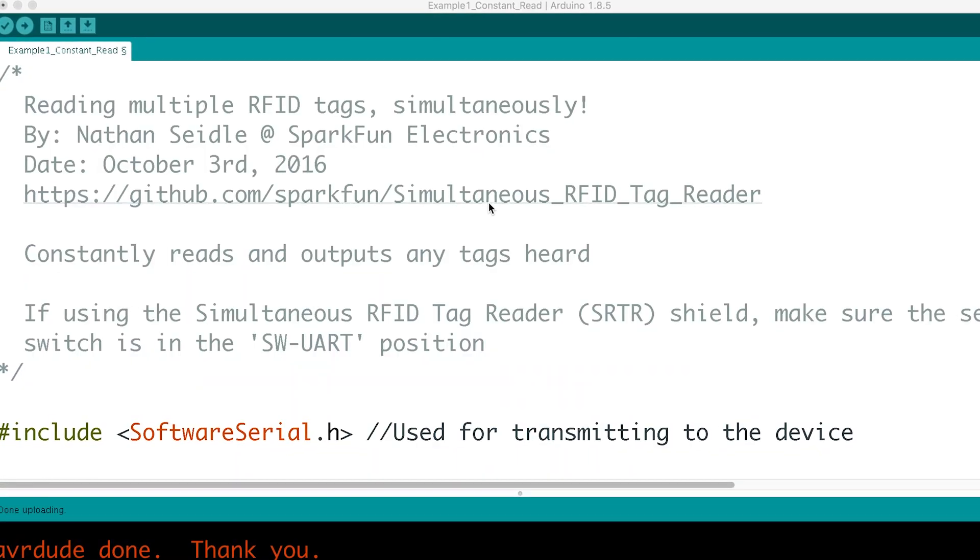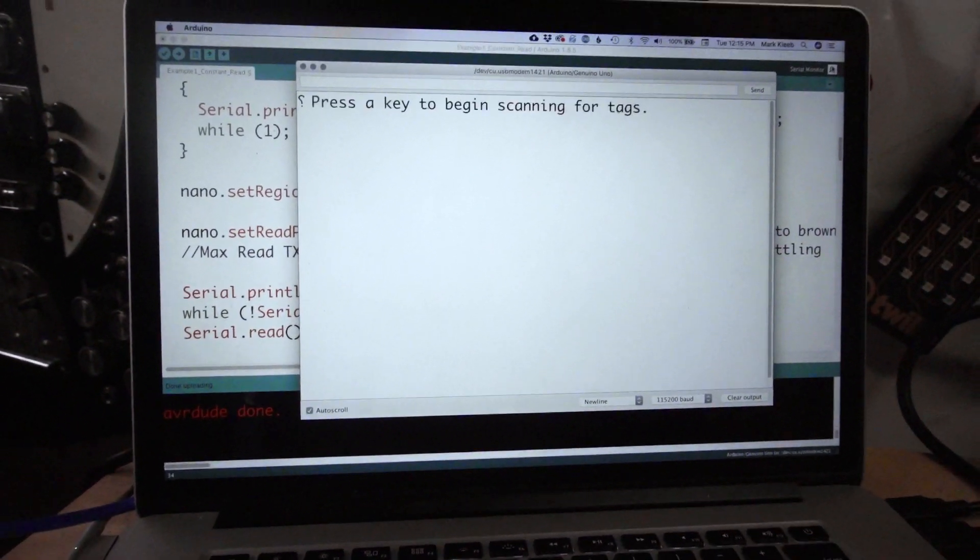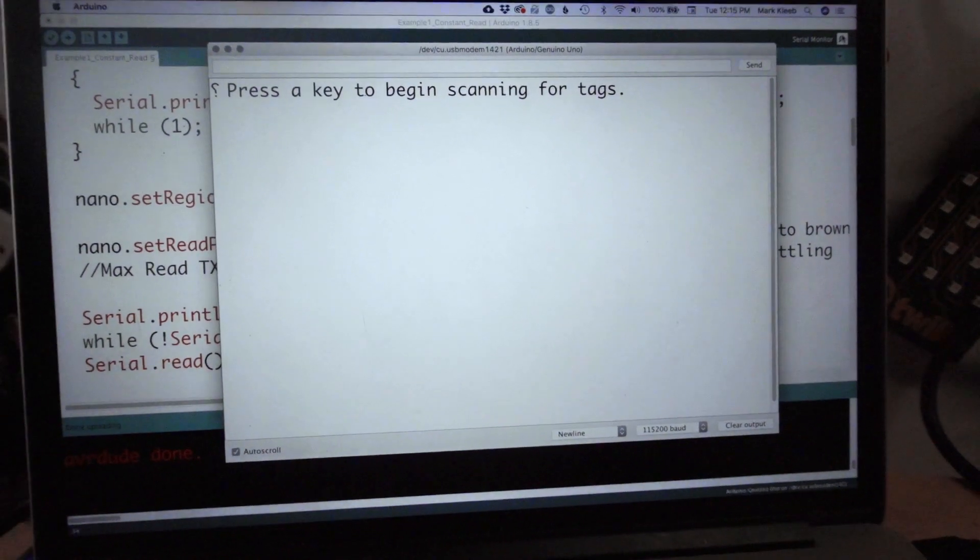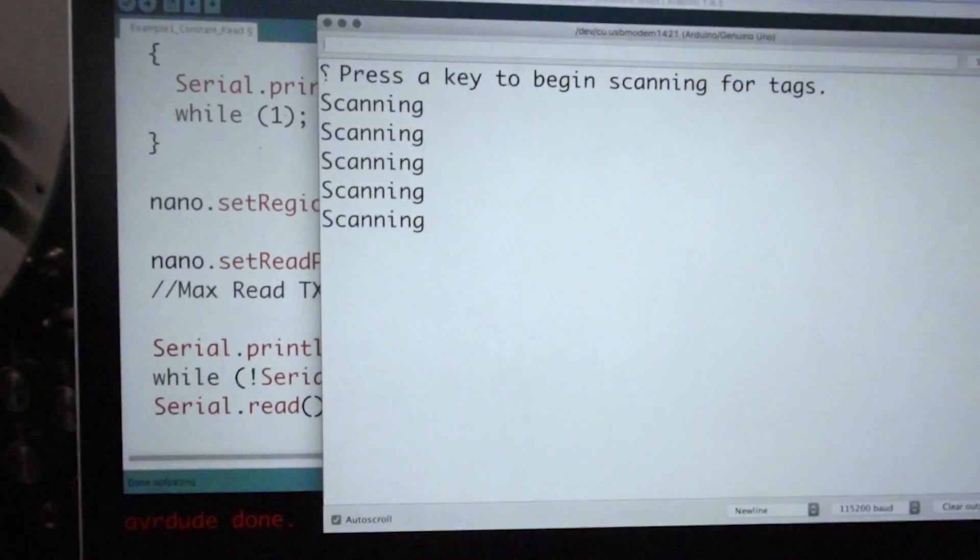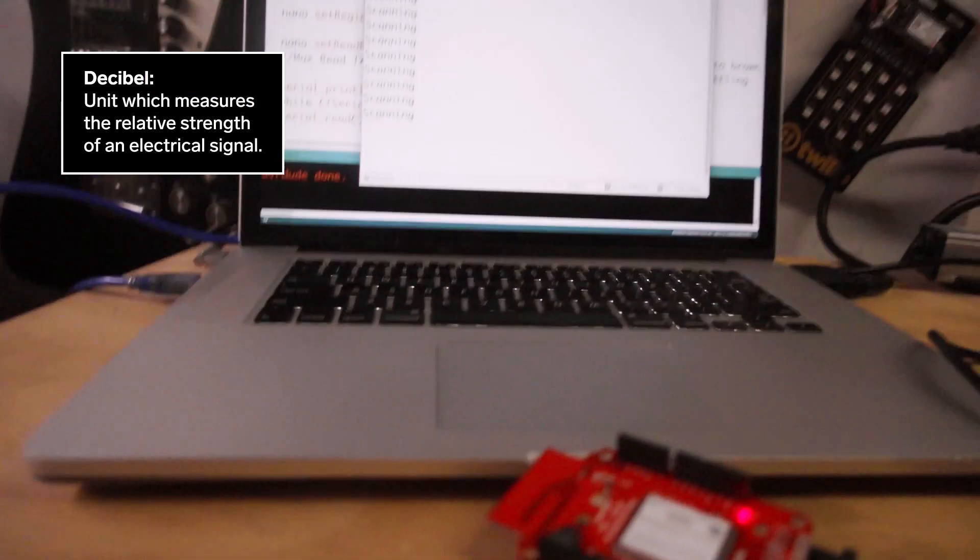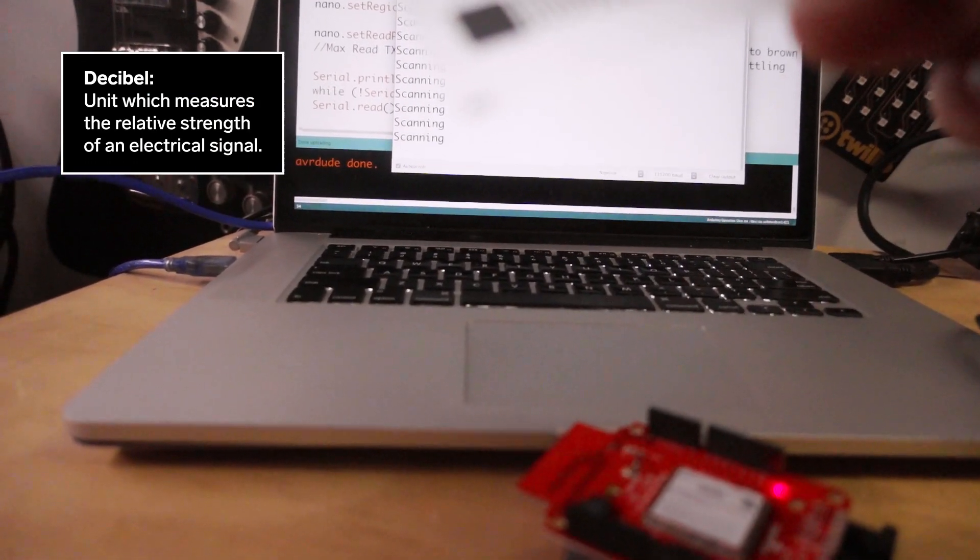So I've got some example code here that came from the SparkFun website. And then I'm going to pop open my serial port and it says, press a key to begin scanning. All right. So there's no RFID tags in the vicinity. And because it's five decibels, I probably won't see anything for more than a few inches.